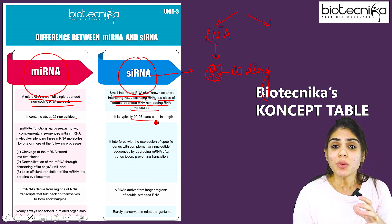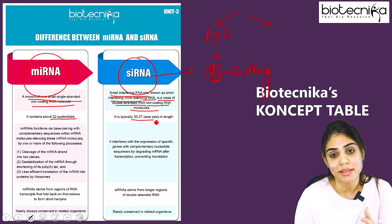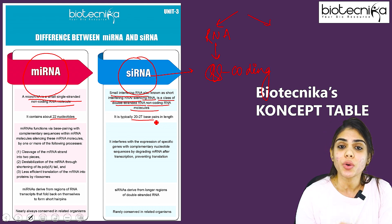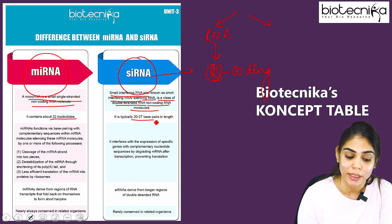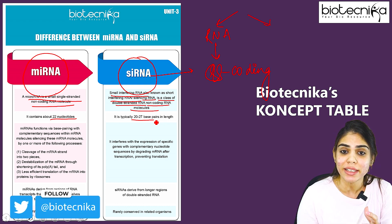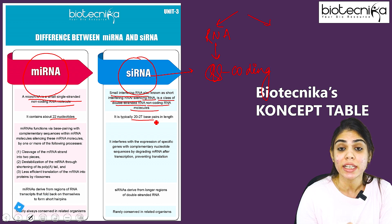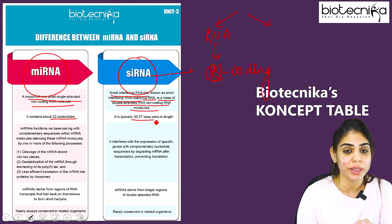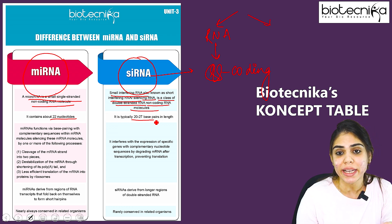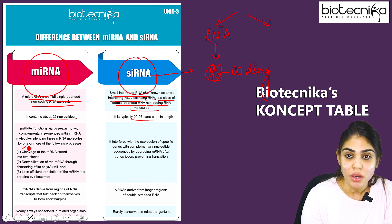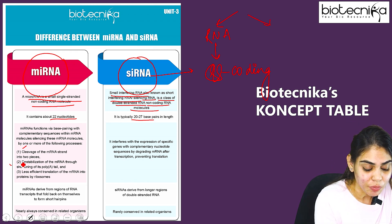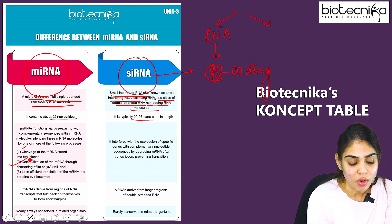Now, how do miRNA and siRNA cause translational arrest and interfere with gene expression? It is totally based on the complementarity between miRNA and its target, that is messenger RNA. miRNA with its complementarity sequence binds with its target mRNA and decides what kind of translational arrest will occur. Based on the mechanism, these can be of three types: it can either cleave the mRNA into two pieces, destabilize the mRNA via shortening of the poly-A tail, or cause less efficient translation of mRNA into proteins by ribosomes.